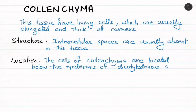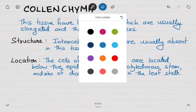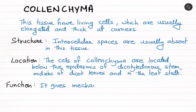The cells of colenchyma are located below the epidermis of dicotyledon stem, in the mid ribs of dicot leaves, and in the leaf stalk.